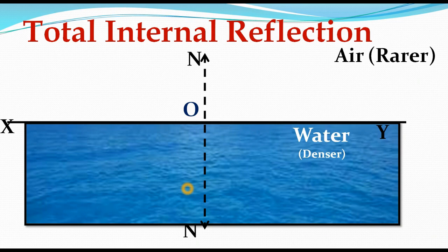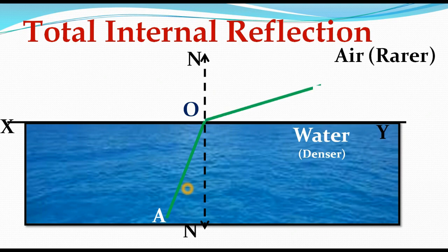Now let us see ray AO travelling from point A to point of incidence O in the water, the denser medium. When a light ray travels from denser to rarer medium it definitely suffers from refraction — it bends away from the normal line in the direction of OP. So AO is the incident ray travelling through the denser medium, and OP is the refracted ray travelling through the rarer medium, which is air.